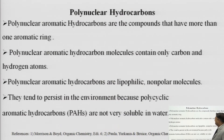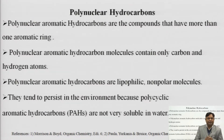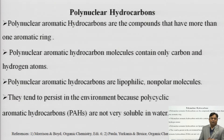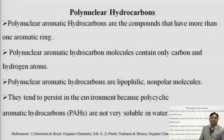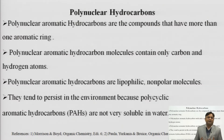First of all, naphthalene is a polynuclear hydrocarbon - it is having two benzene rings fused together at the ortho position. As it belongs to the polynuclear hydrocarbons category, we need to know what polynuclear hydrocarbons actually are. As the name suggests, polynuclear means having more than one nucleus or cycle - it is also known as polycyclic hydrocarbons.